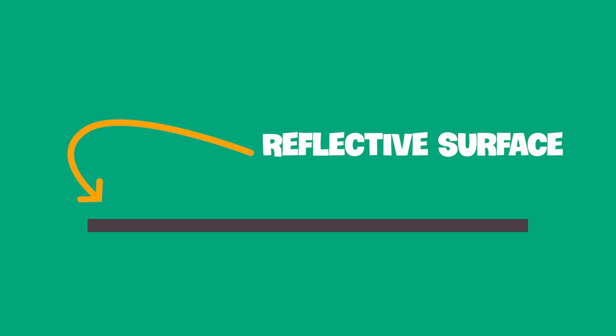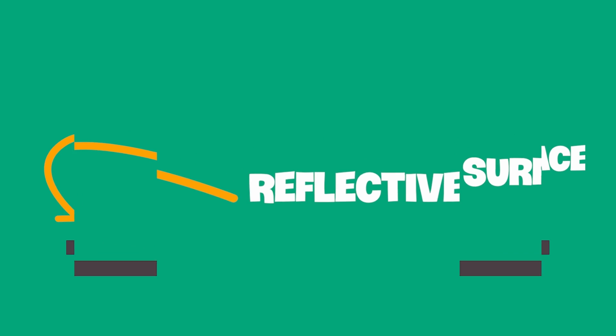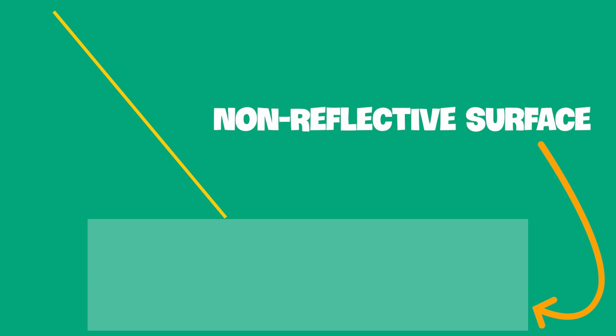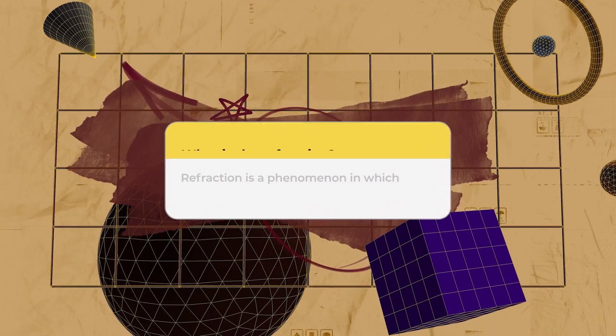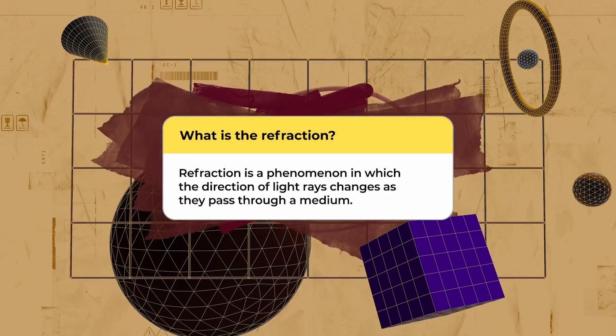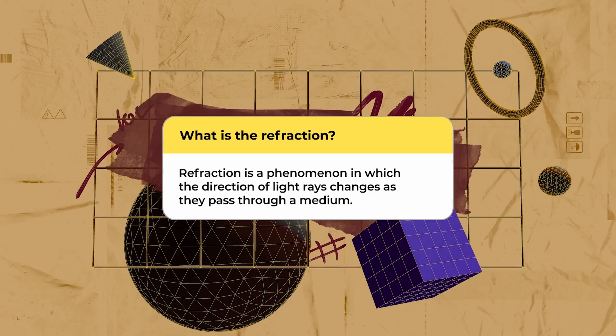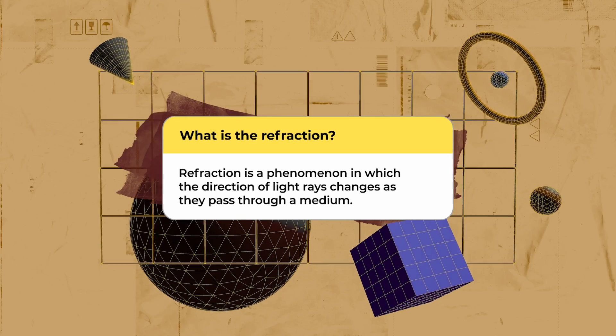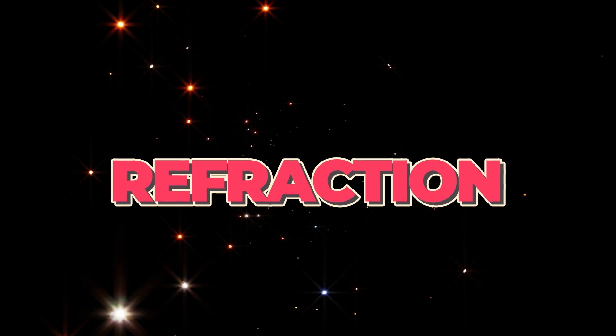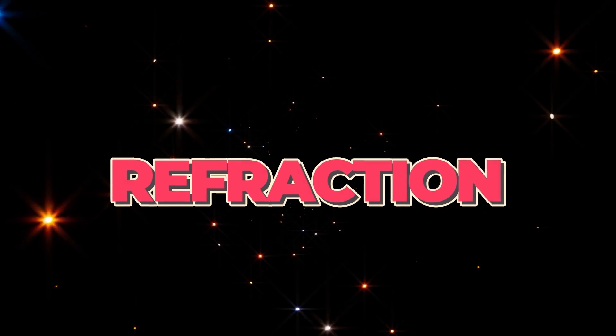There are certain parameters that any surface must fulfill in order to reflect light. But what if a surface does not reflect light, but lets it pass through instead? In such a case, refraction occurs, which is a phenomenon involving a change in the direction of light rays as they pass through a medium. Refraction is the reason that stars appear to twinkle at night.